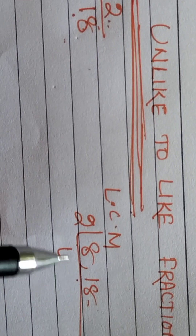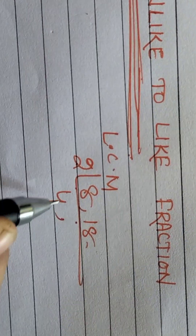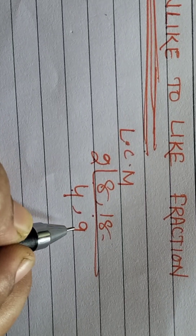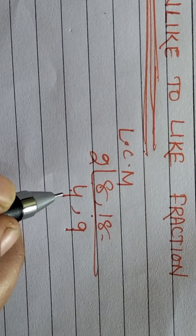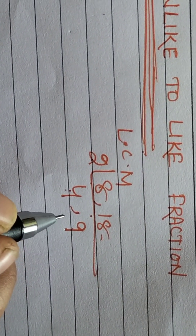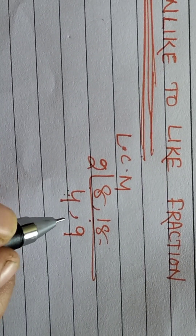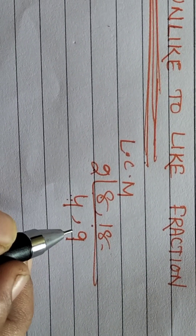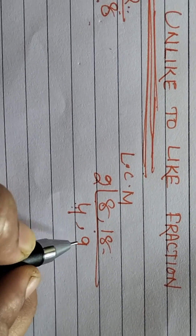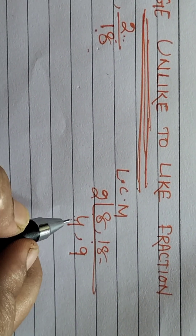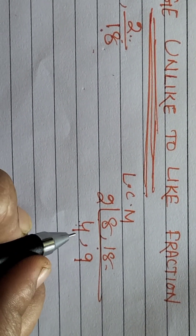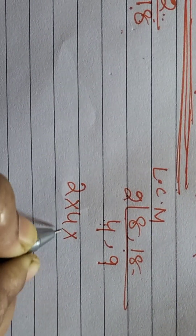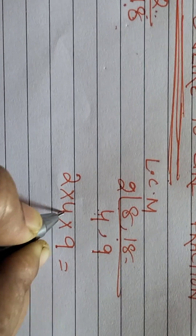We take the LCM of both denominators, 8 and 18. 2 fours are 8, and 2 nines are 18. Then 4 and 9 — which one number is divisible by both? If you take 2, that is not divisible. 4 and 9 are not divisible by one number, so you do LCM: 2 into 4 into 9.